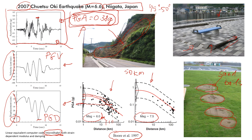So 50 kilometers away from the epicenter, the PGA will be around 0.12 g's. That's how we use this chart, so we can have a better idea of what happened around the epicenter. That's it for this video — I'm going to make a few more videos about earthquake engineering. Have a nice day and bye!